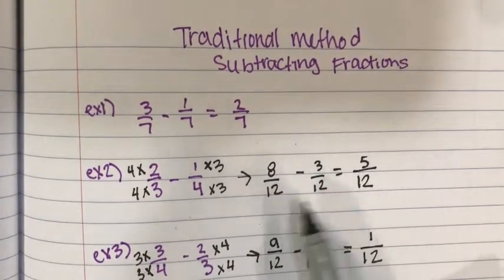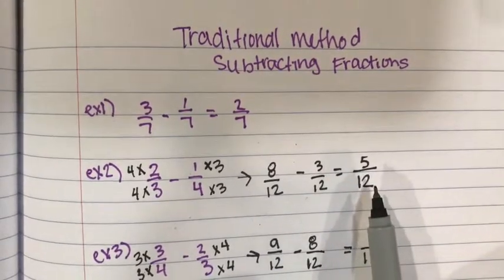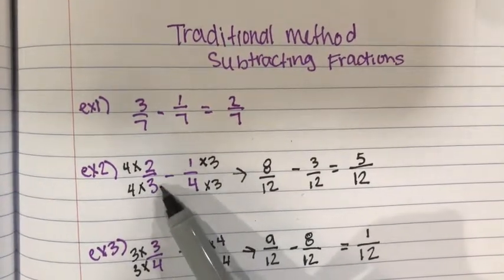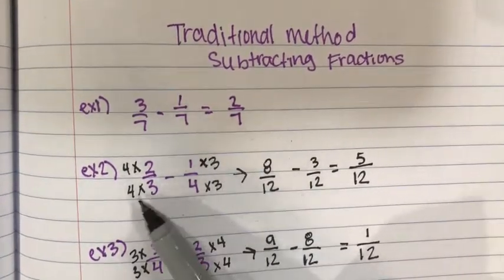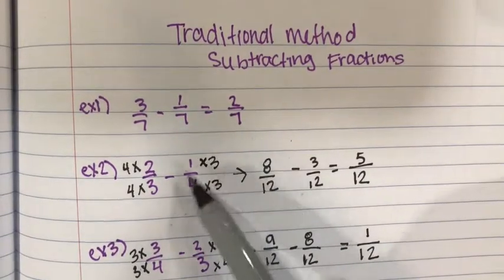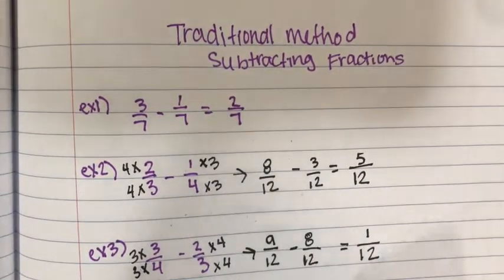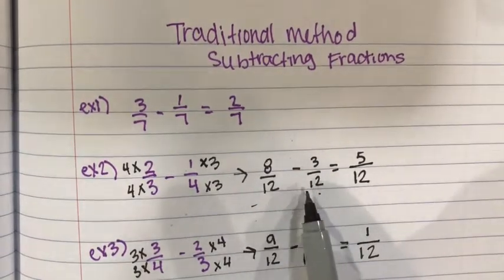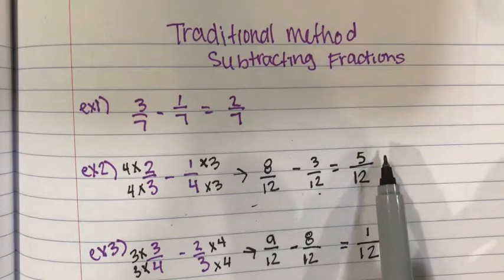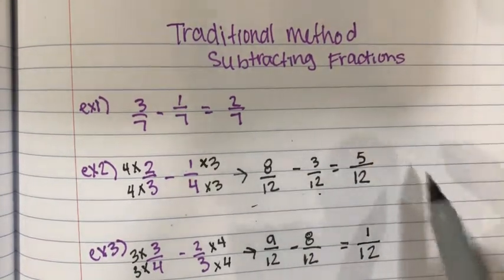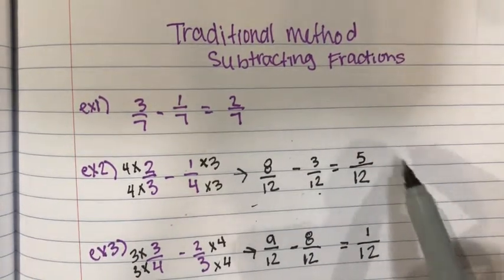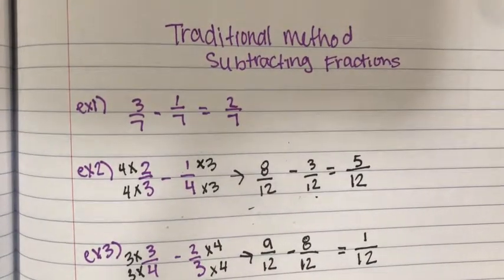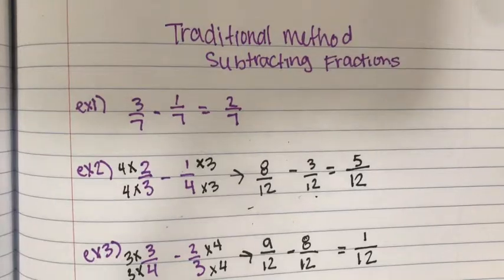If you don't then you are not going to get the correct answer. If you have different denominators multiply the other fraction's denominator by the top and bottom of your fraction and that will give you an equivalent denominator, the same denominator. You can always reduce or simplify down if you need to but all the examples that we had they were in their simplest form. So that is the traditional method for subtracting fractions.